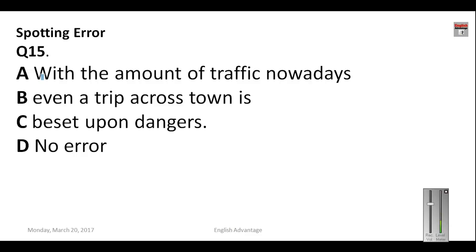Question number fifteen: 'With the amount of traffic nowadays, even a trip across town is beset upon dangers.' Find the error. As you may know, 'beset' is normally followed by 'by' or 'with' — not 'upon.' So C is the erroneous part and C will be your answer.